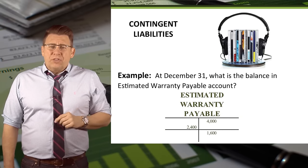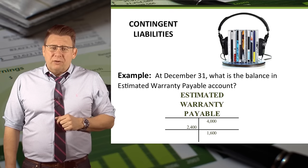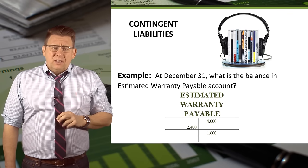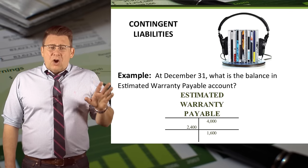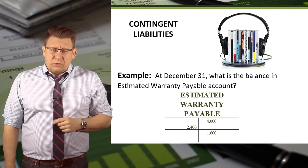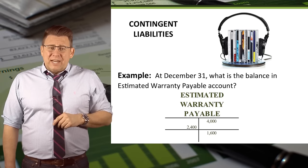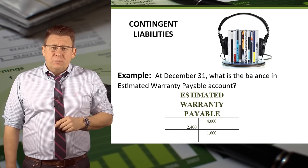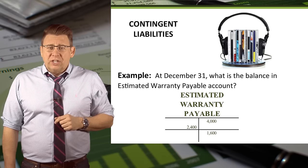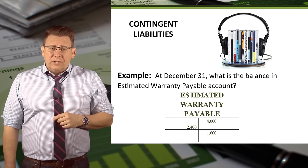Finally, at December 31st, what is the balance in the estimated warranty payable account? I like to use a T-account to answer questions like this. In this case, the account was initially credited for $4,000 when the expense was recorded. We debited the account when we settled some of the warranty claims, leaving a credit balance of $1,600 at year end, which is the remaining estimate of our outstanding warranty.